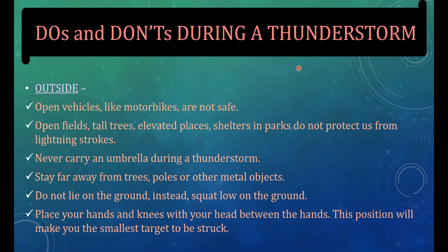Do's and don'ts during a thunderstorm. During lightning and thunderstorm, no open place is safe. Hearing thunder is an alert to rush to a safer place. After hearing the last thunder, wait for some time before coming out of the safe place. If we are outside, open vehicles like motorbikes are not safe. Open fields, tall trees, elevated places, shelters in parks do not protect us from lightning strokes. Never carry an umbrella during a thunderstorm. Stay far away from trees, poles or other metal objects. Do not lie on the ground. Instead, squat low on the ground. Place your hands and knees with your head between the hands. This position will make you the smallest target to be struck.